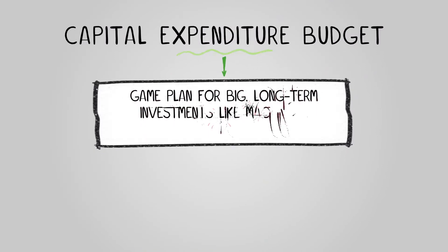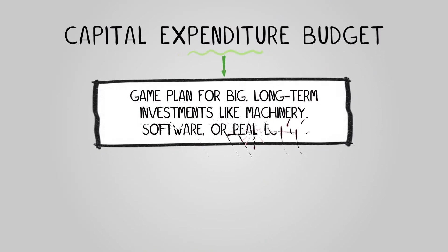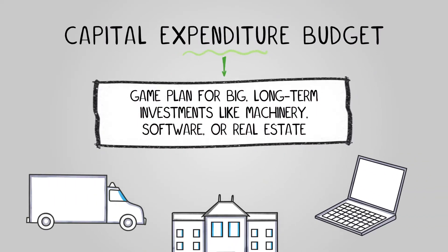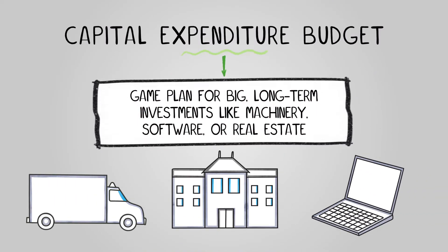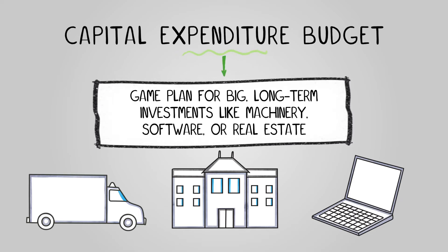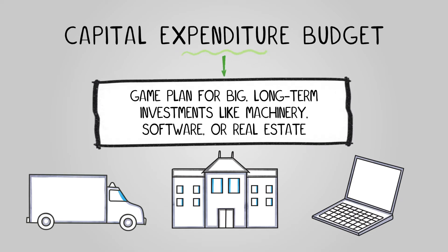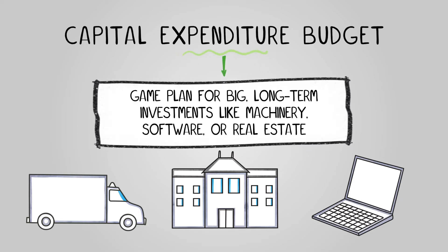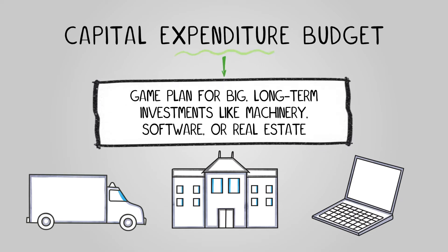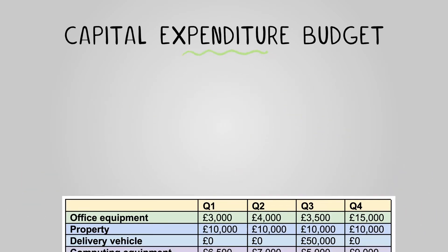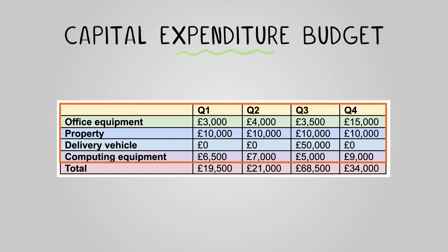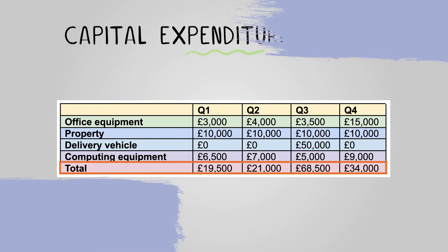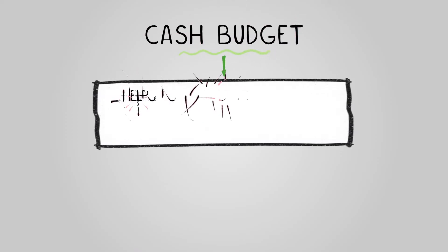The capital expenditure budget is your game plan for big long-term investments like machinery, software, or real estate. Companies use this to stay competitive and grow. Key elements here are individual expenditure costs and the overall total.